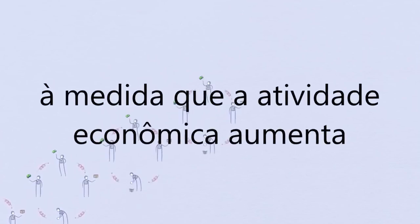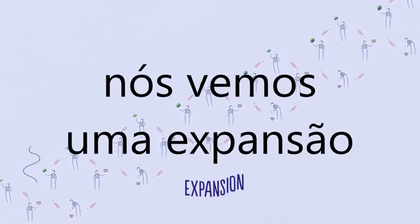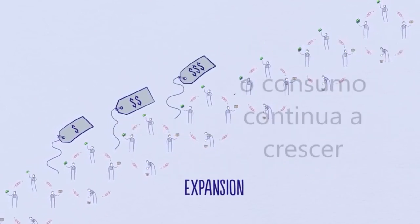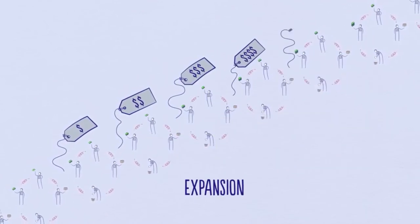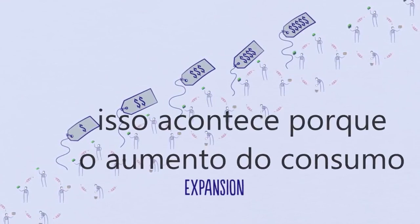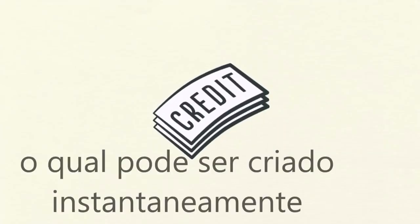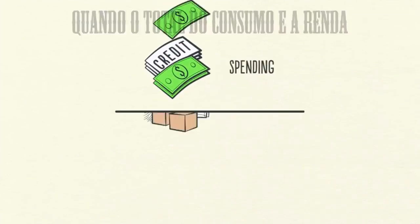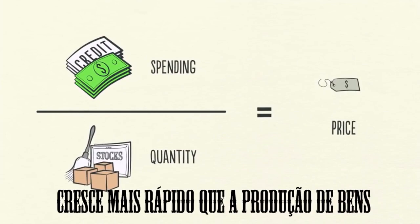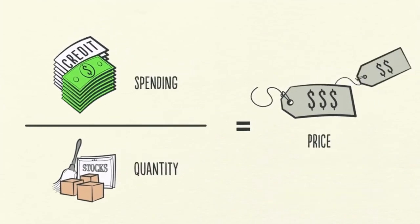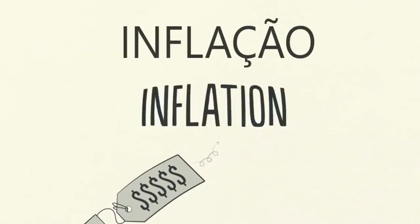As economic activity increases, we see an expansion — the first phase of the short-term debt cycle. Spending continues to increase and prices start to rise. This happens because the increase in spending is fueled by credit, which can be created instantly out of thin air. When the amount of spending and incomes grow faster than the production of goods, prices rise. When prices rise, we call this inflation.